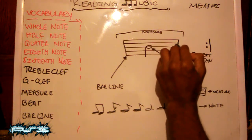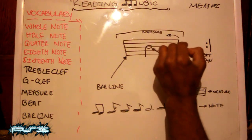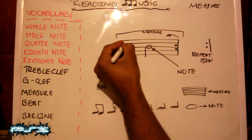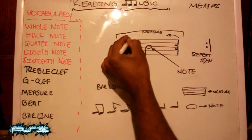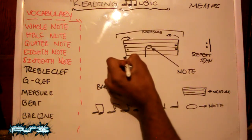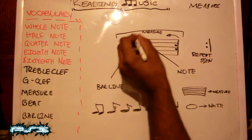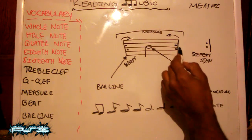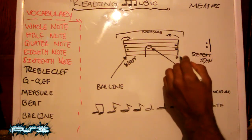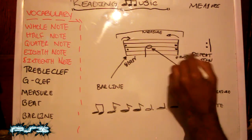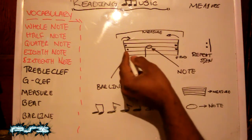This type of repeat sign is telling you to go back. Now if you see this other type of repeat sign, this is telling you to go forward — or this is the beginning. And then this means you've reached the end of the phrase. That means you've reached the end of the phrase and you go to this repeat sign.